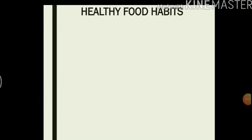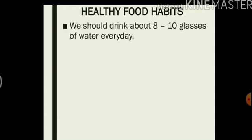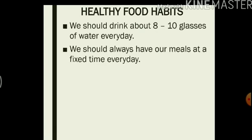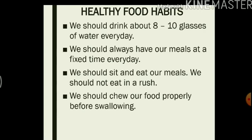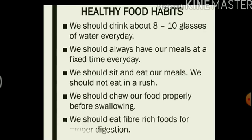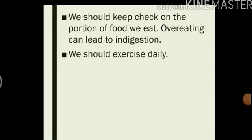Now we have come to the final part of the chapter where I will mention some healthy food habits that we should follow every day. We should drink about 8 to 10 glasses of water every day. We should always have our meals at a fixed time every day. We should sit and eat our meals and not eat in a rush. We should chew our food properly before swallowing. We should eat fibre-rich foods for proper digestion — we read in chapter 1 how fibre is important for digestion. We should keep check on the portion of food we eat, as overeating can lead to indigestion. We should exercise daily. By following these few healthy habits every day, we can keep our body healthy and strong.